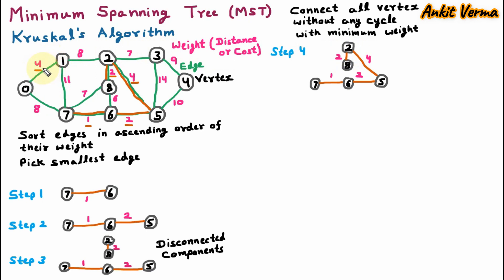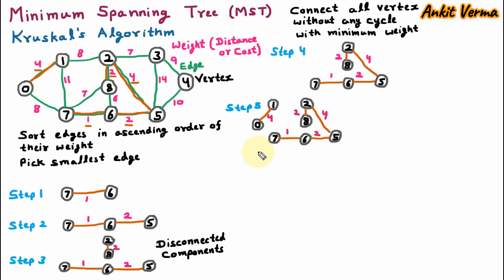From the graph we find the next minimum edge, which is between vertices 0 and 1 with weight 4. So in step 5 one more edge is added. Now checking the next minimum edge, we see weight 6 is the minimum. However, if I connect vertices 8 and 6 it would form a cycle, which violates the condition that the minimum spanning tree should not have any cycle. So we cannot connect the edge between 8 and 6.